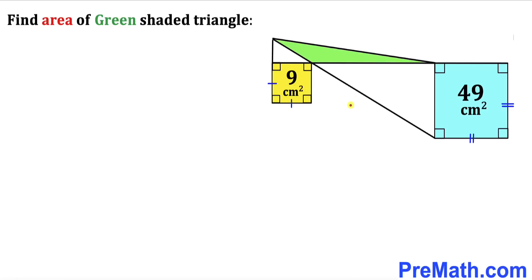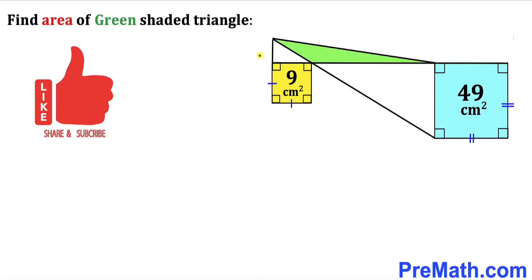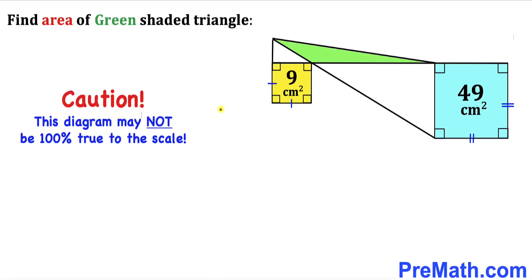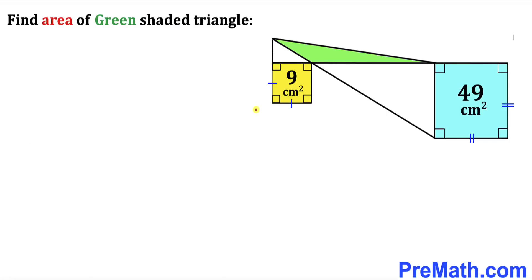Welcome to pre-math. In this video we have got these two squares lined up as you can see in this diagram, such that the area of the blue square is 49 centimeter square whereas the area of the yellow square is 9 centimeter square. We are going to calculate the area of this green shaded triangle. Note that this figure may not be 100% true to scale. Let's get started with the solution.